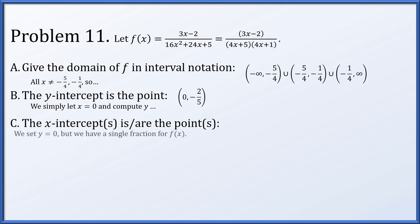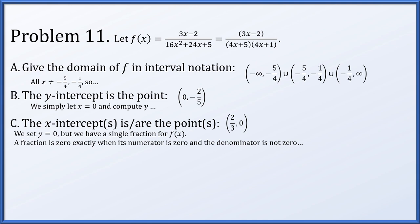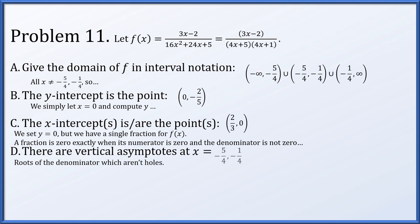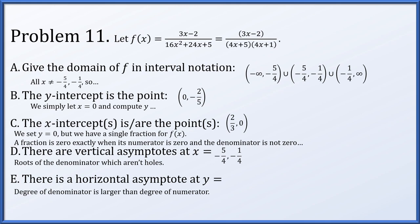For x-intercepts, a fraction equals zero only when the numerator is zero and the denominator is not. Setting the numerator (3x minus 2) equal to zero gives x equals 2/3, which does not make the denominator zero, so the only x-intercept is (2/3, 0). Vertical asymptotes are at x equals negative 5/4 and x equals negative 1/4. For the horizontal asymptote, the denominator has degree 2 and the numerator has degree 1, so since the denominator's degree is larger, the horizontal asymptote is y equals 0.